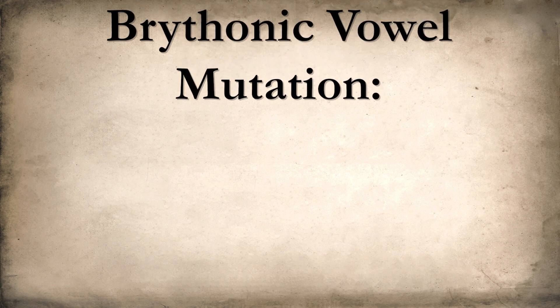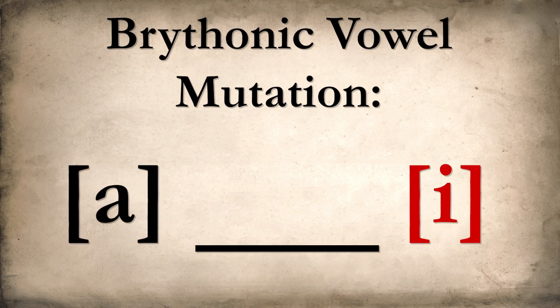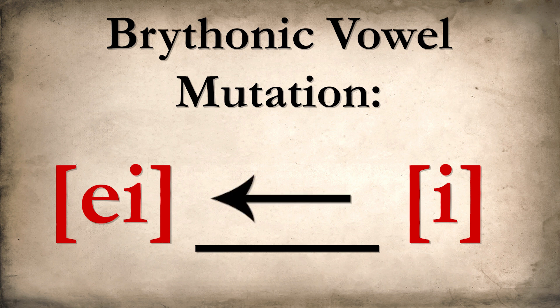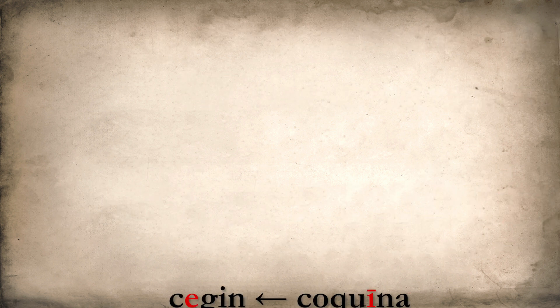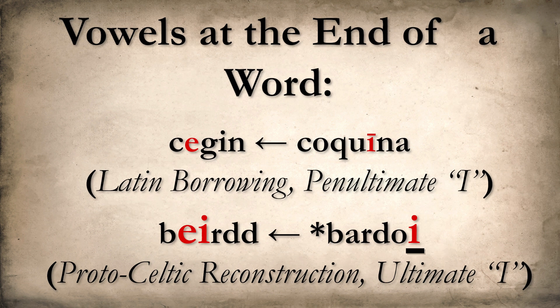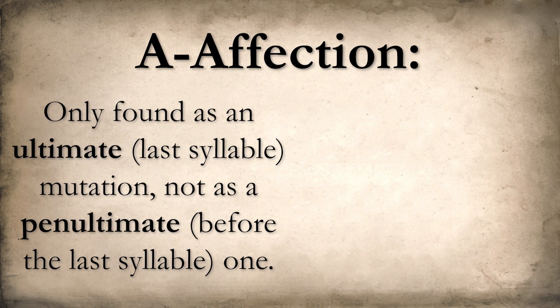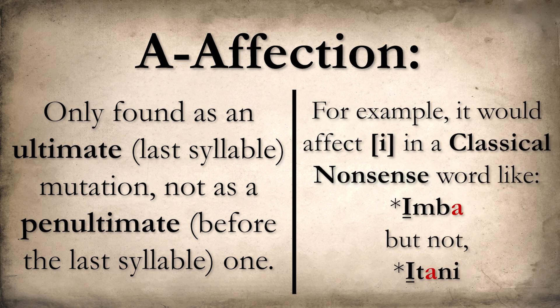Over the course of Welsh and the other Brythonic languages, vowels really tended to affect, or mutate, their preceding neighbors. In particular, vowels at the end of a word, also known as ULTIMATE vowels — sounds pretty cool, huh? — had the strongest effect. The important thing to note here is that A-affection is only found as an ultimate mutation, not as a penultimate one. Penultimate means before the ultimate, so in this case it means the syllable before the last one.